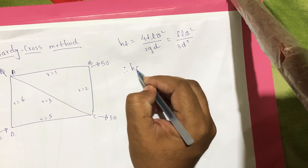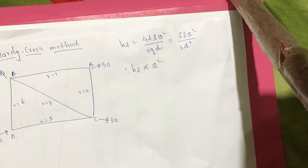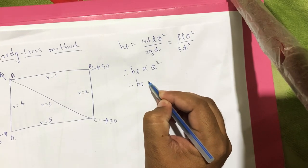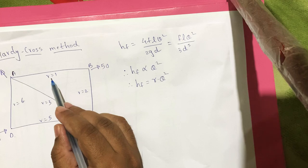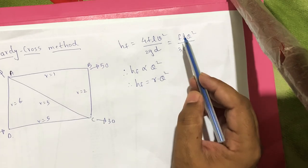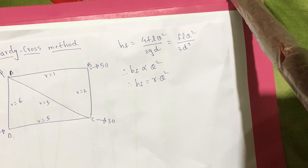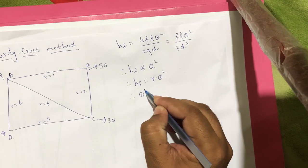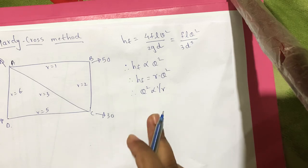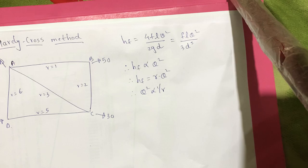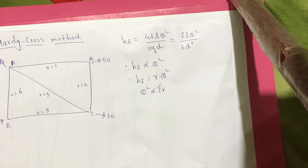From this equation, HF is proportional to Q². If you remove the proportionality, the constant that appears is denoted by small r, which is the combination FL/(3D⁵). Discharge Q is inversely proportional to R — this is very important to understand. Higher the value of R, lesser will be the discharge given to the pipe. Now let's jump to the method: the Hardy Cross method, which is globally accepted.